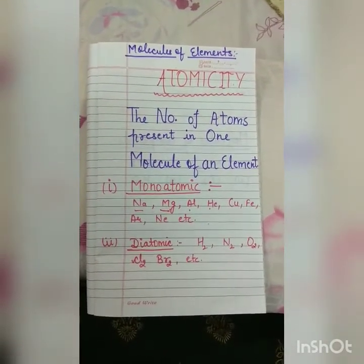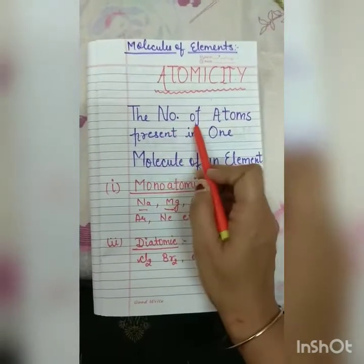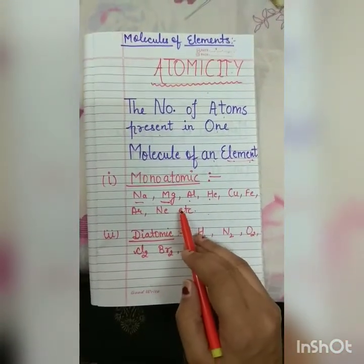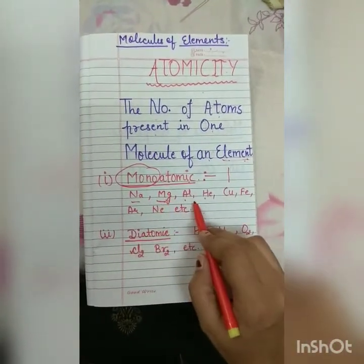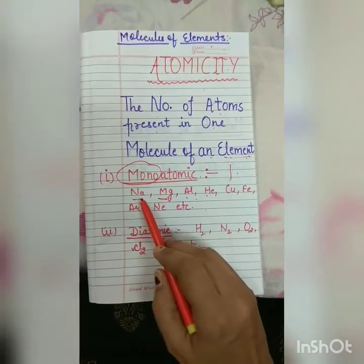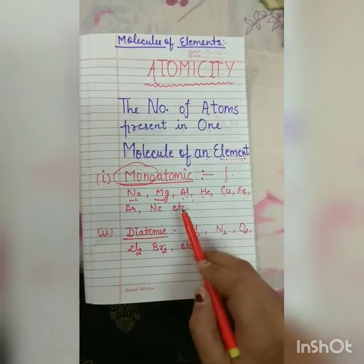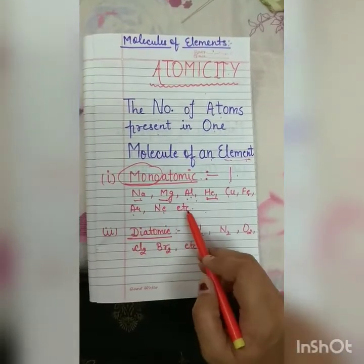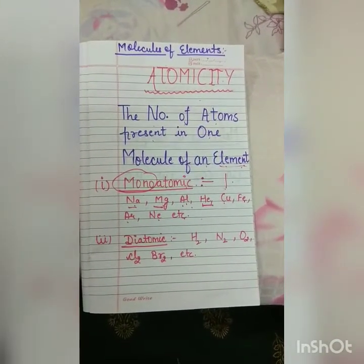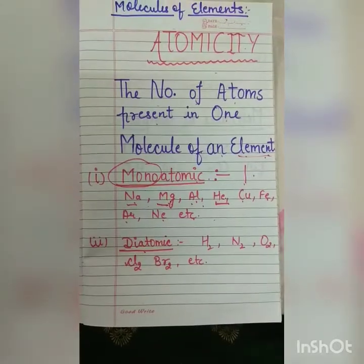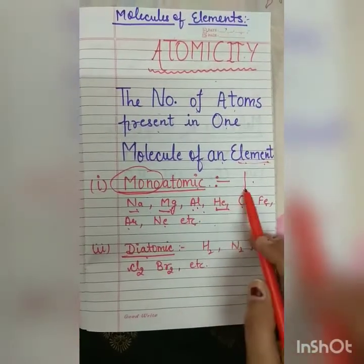On the basis of the number of atoms present in a molecule, we define the term atomicity. The term atomicity means the number of atoms present in one molecule of an element. For example, the first we are having monoatomic — mono means one. The molecule in which only one atom of the same element is present. For example, different metals like sodium, magnesium, aluminium, copper, iron, and some noble gases like helium, argon, neon, etc. All these elements have only one atom in their molecule, so they are monoatomic in nature. Most of the metals and noble gases have only one atom present in their molecule, so their atomicity is one.